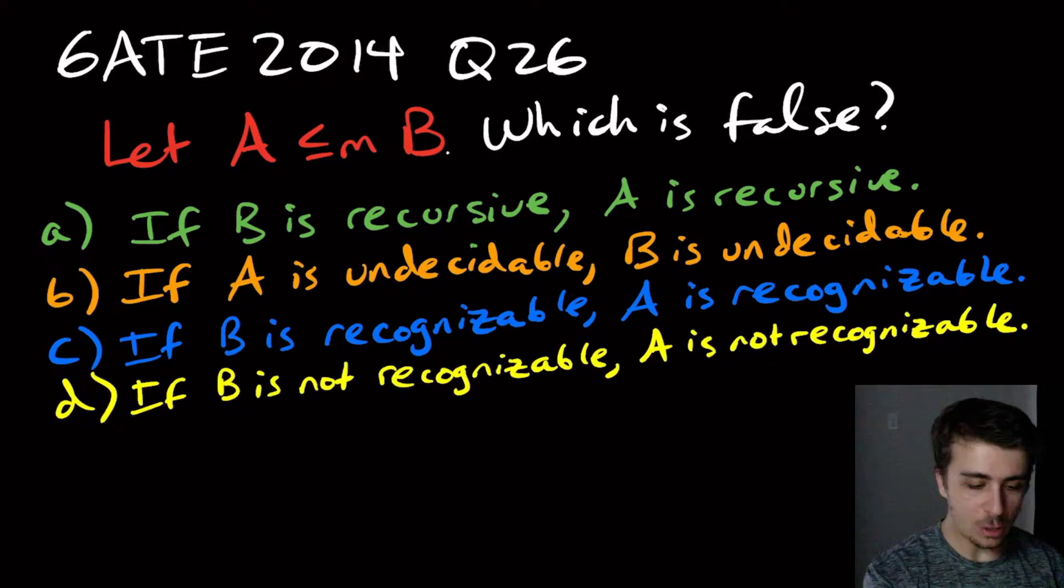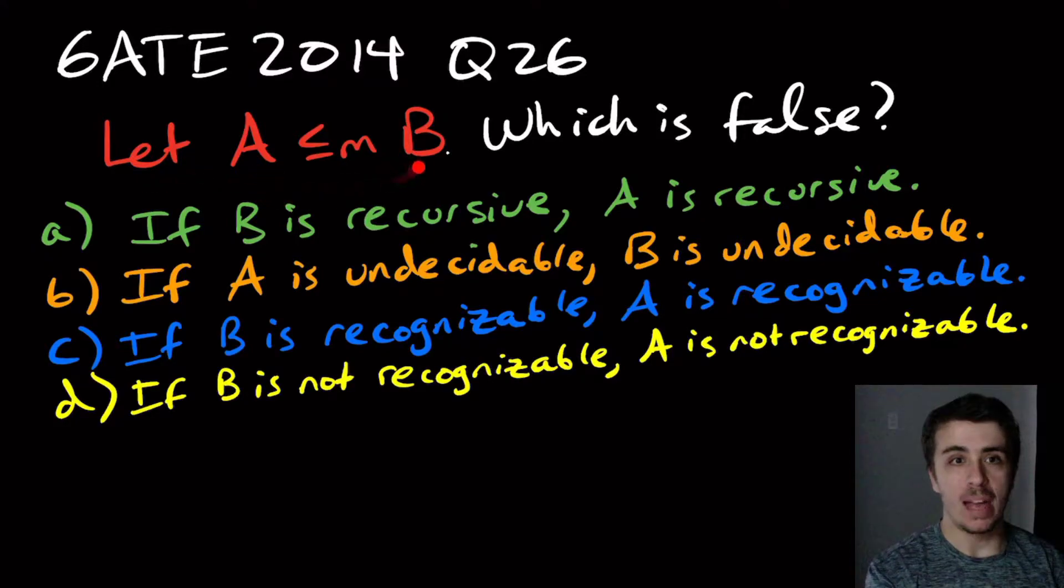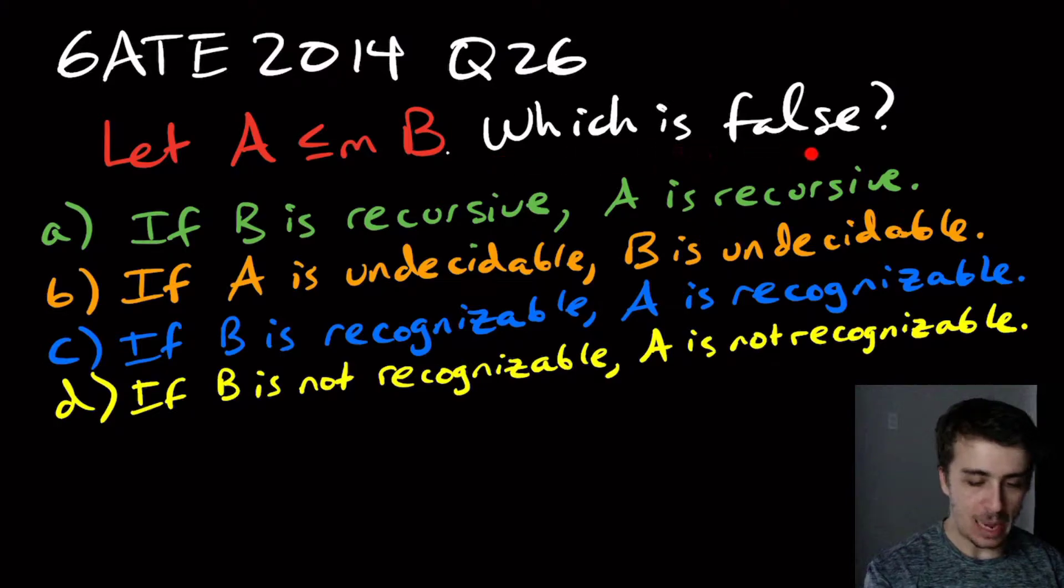So we have a GATE 2014 question right here, number 26, and we have two languages A and B, where A mapping reduces to B, and we're asked to figure out which of these four answers is false.